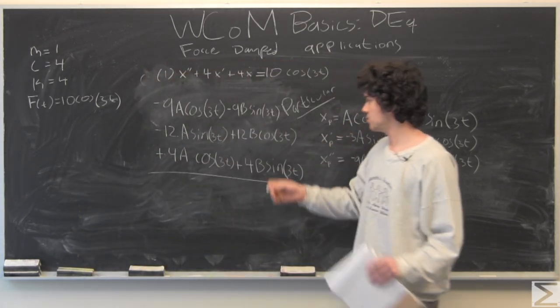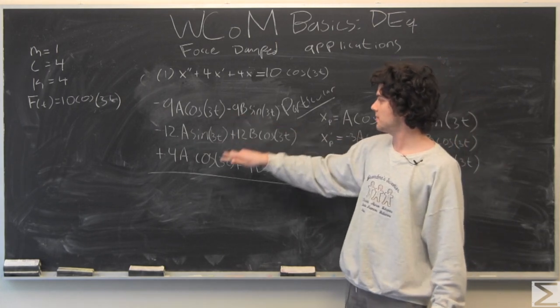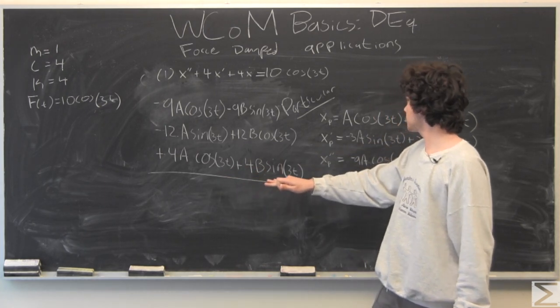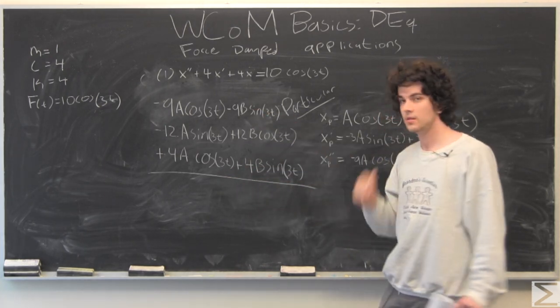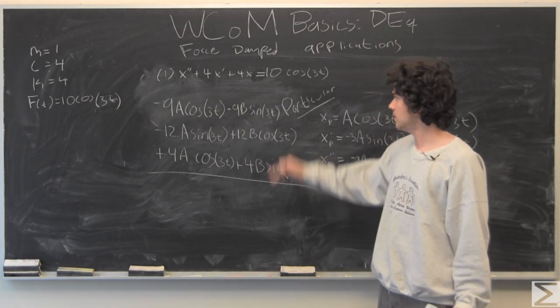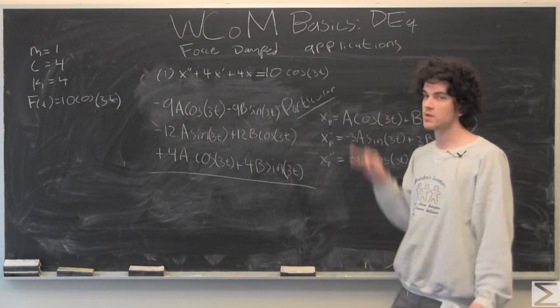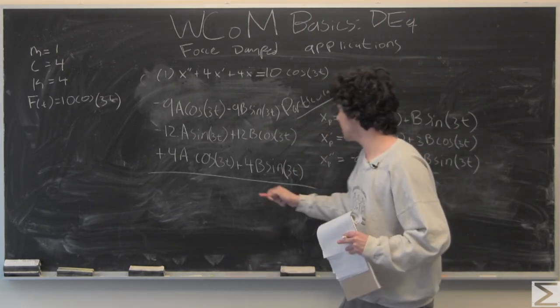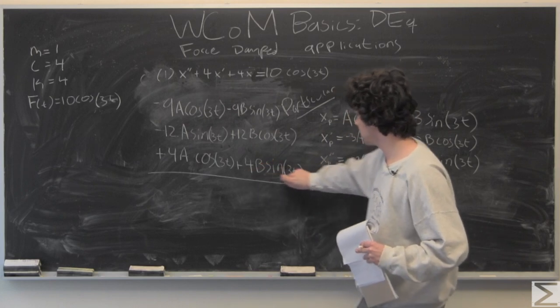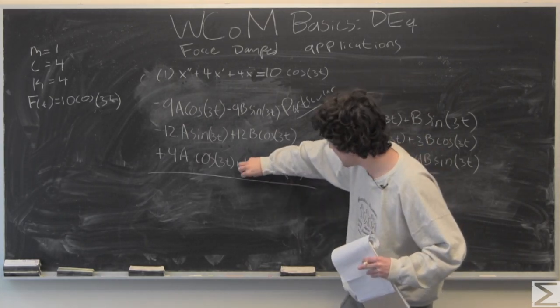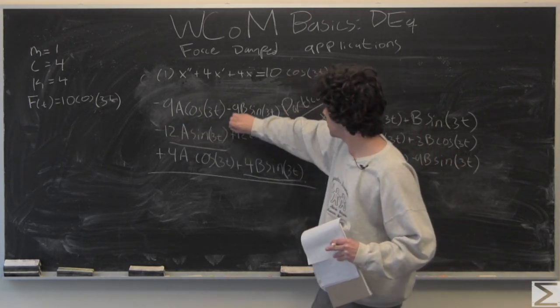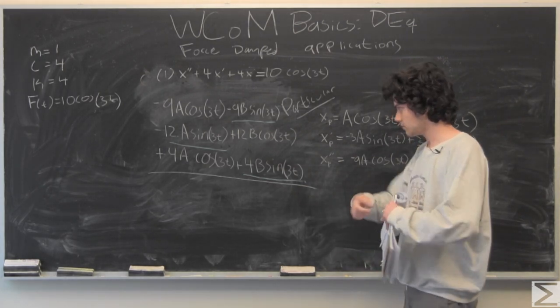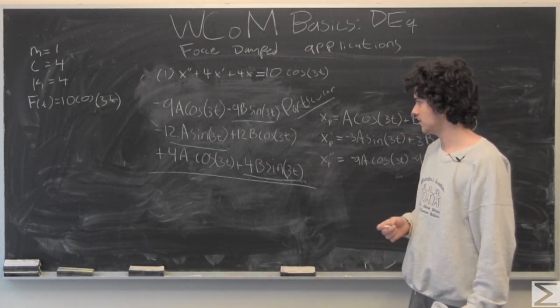So I'm going to go ahead and erase this and plug in and solve for a and b. So what I've done is written this is x double prime, this is 4 times x prime, and this is just 4 times x sub p. And keep in mind this is all equal to 10 cosine of 3t, but what we're going to do first is just simplify by adding together our sine parts and our cosine parts.